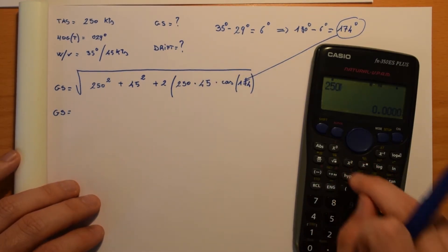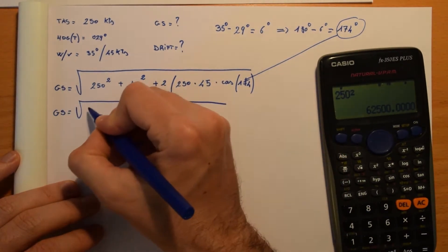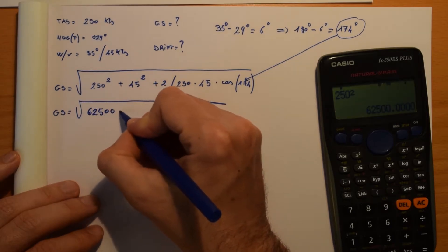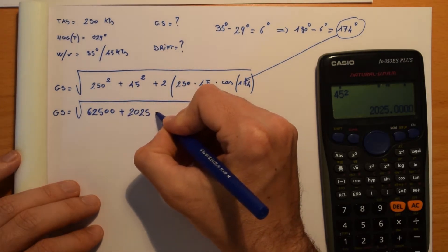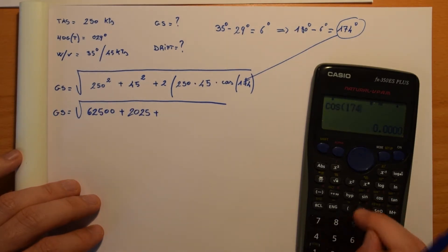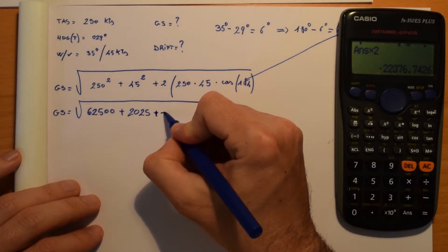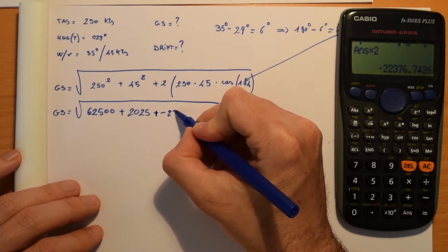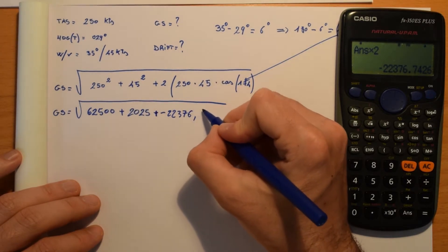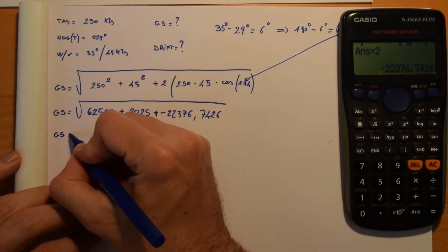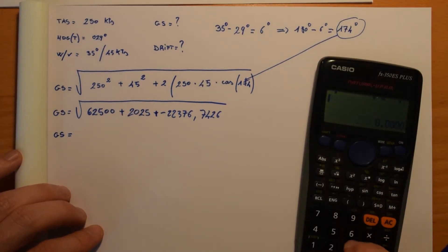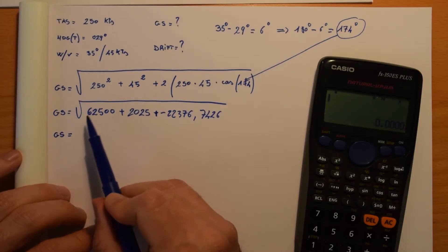So 62,500 plus 2,025 plus cosine 174, so minus 22,376.7426. So we have everything and then we make the square root of this result.